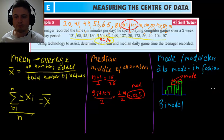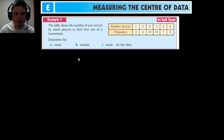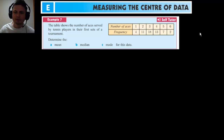Let's try to make a frequency table for another example. We'll take a look at example 7 on page 177. This is a table of frequencies from tennis players serving aces during a tournament — number of aces and frequency of aces. The frequency table is already given to you, and what we have to find is the mean, median, and mode for this data.